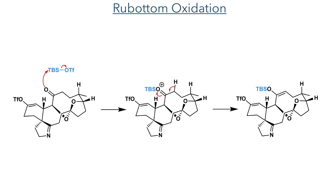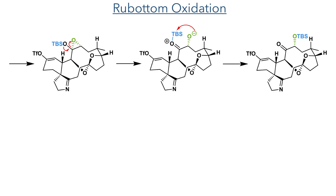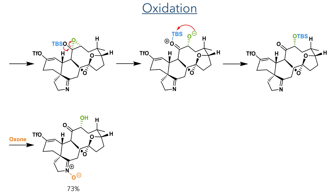This product was taken forward to a Rubottom oxidation. TBS triflate is first attacked by the ketone, triggering an elimination reaction that forms a silyl enol ether. This was then attacked by DMDO, forming an epoxide. The electron density residing on the oxygen of the silyl ether can open the epoxide upon reformation of the carbonyl, and the silyl group then migrates, forming a silyl ether alpha to the starting ketone. This compound was then oxidized using Oxone, which cleaves the silyl ether to generate the hydroxyl group, in addition to the oxidation of the imine to a nitrone.